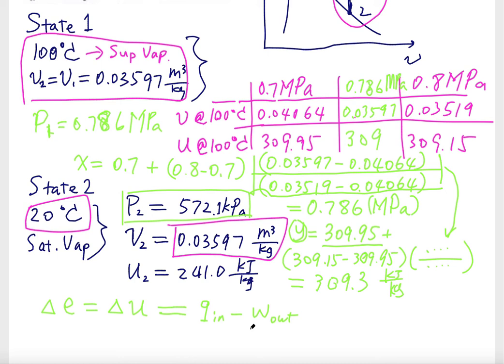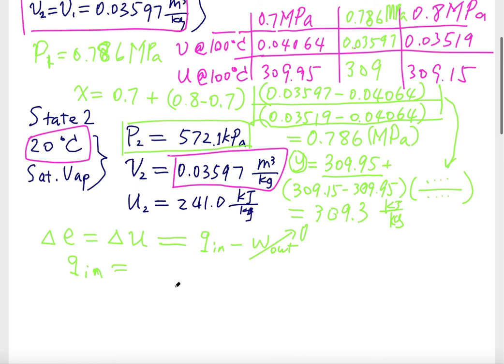The change in the system's energy is simply delta U. And we also know the change in the system is equal to Q in, the heat going into the system, minus the work out of the system. In this case, the work interaction in this process is zero. So Q in would be equal to delta U, which is equal to U2 minus U1. And this is equal to kilojoules per kilogram.